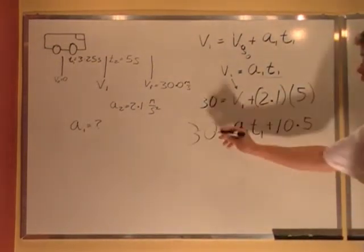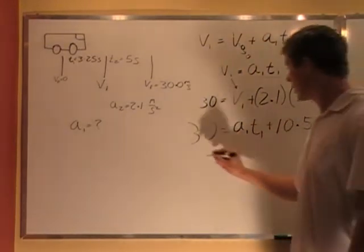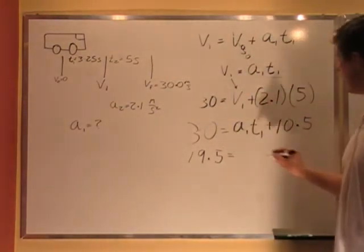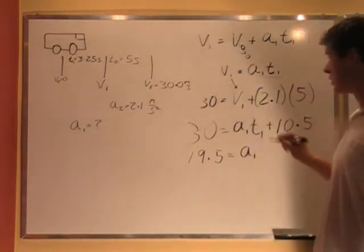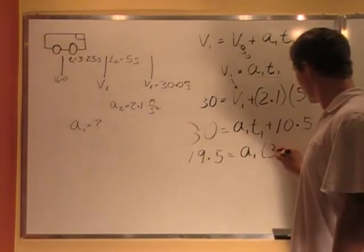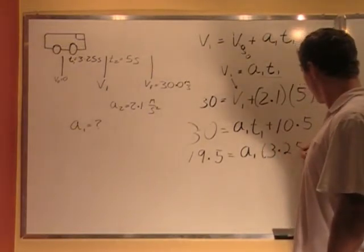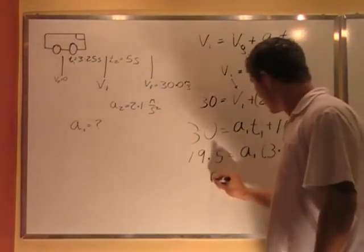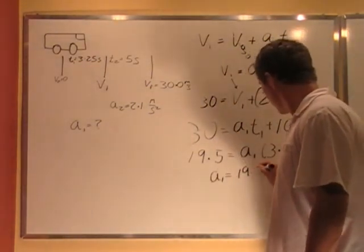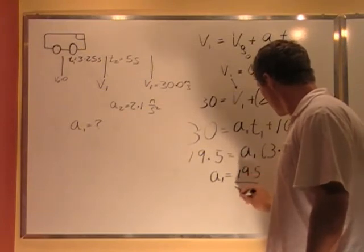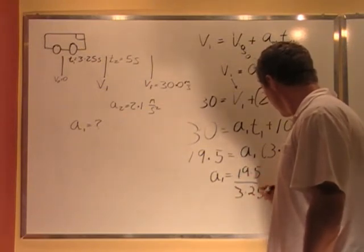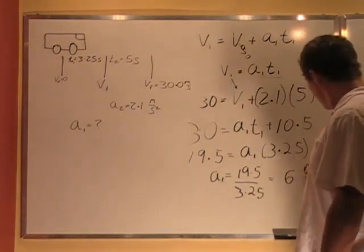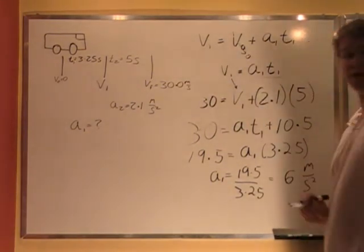So I'm going to subtract 10.5 from 30. Subtract 10.5 from both sides to give me 19.5 equals A1 times T1, which I know to be 3.25. Divide both sides by 3.25, and I get A1 equals 19.5 divided by 3.25, which is equal to 6 meters per second squared.